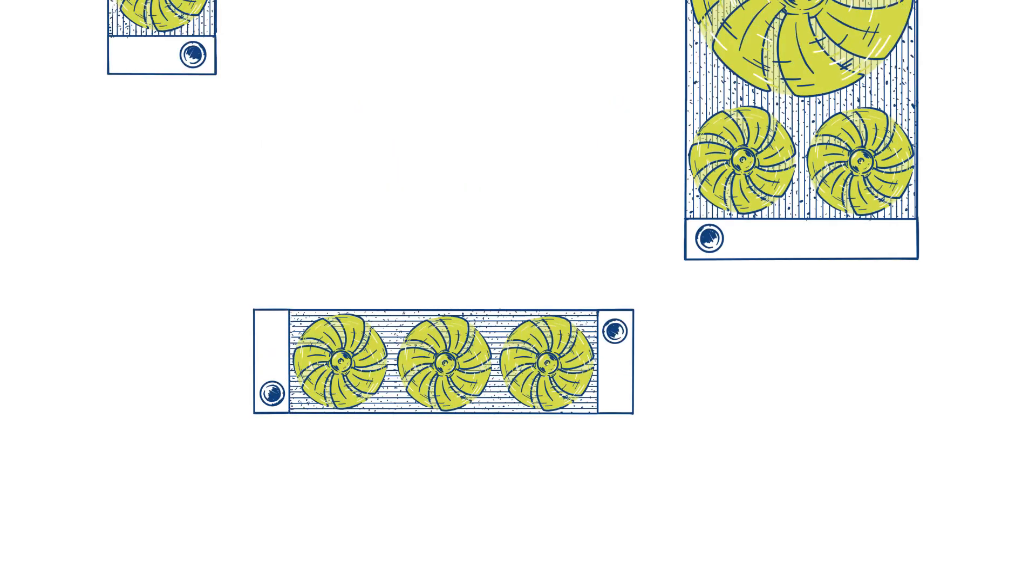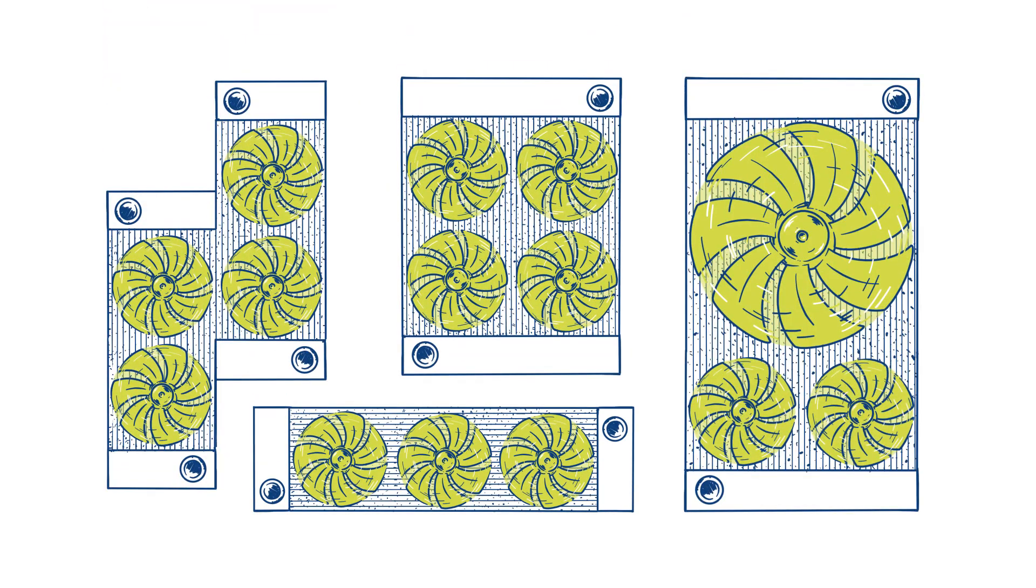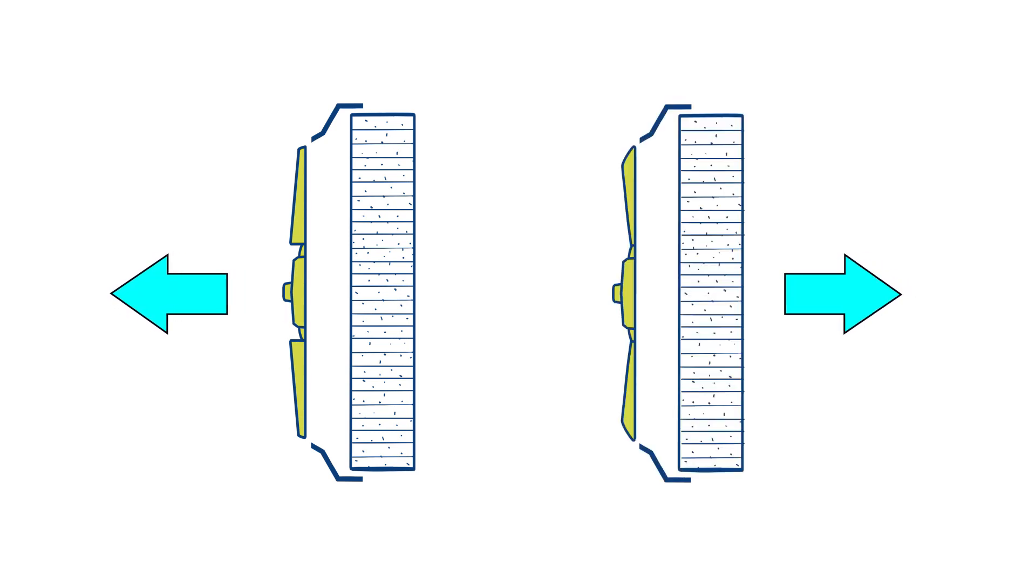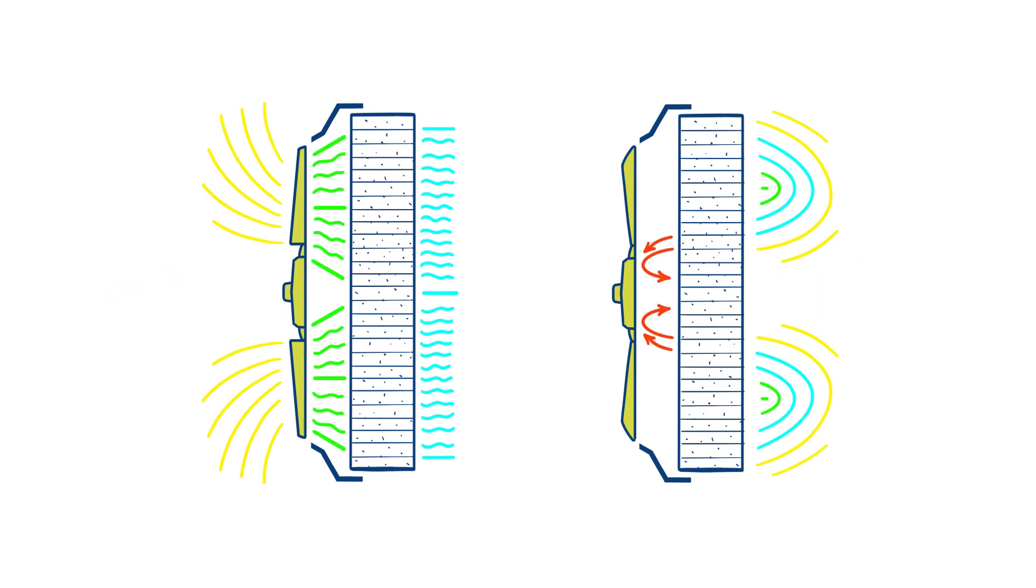Of course, the fan selection depends on the available shape of the cooler. A suction fan is preferable to a blowing fan because it requires a lower planum thickness and ensures better cooling air distribution on the core surface.